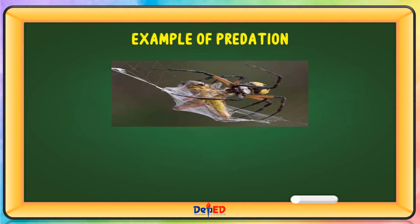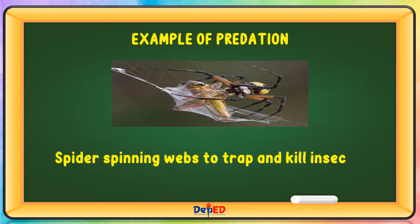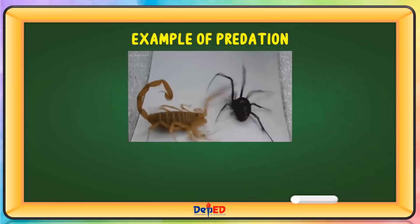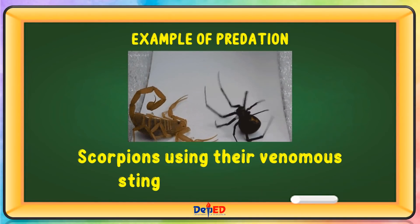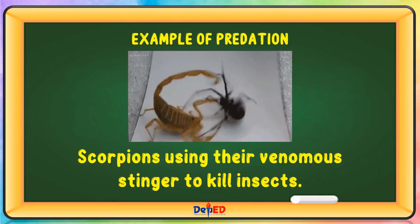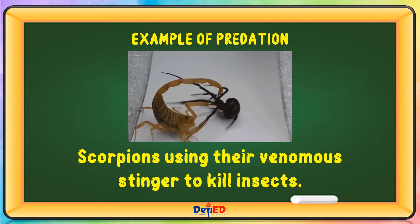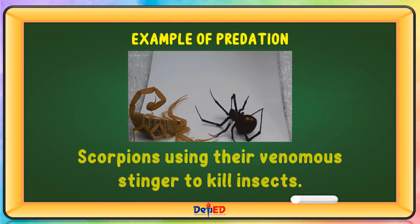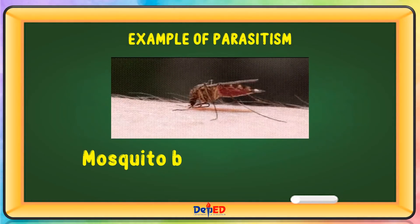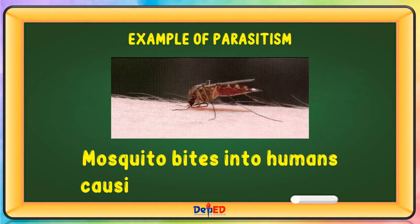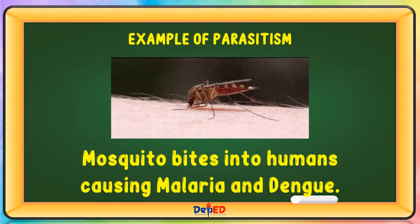An example of predation: a spider spinning webs to trap and kill insects. Another type of predation: scorpions using their venomous stinger to kill insects. An example of parasitism: mosquitoes biting humans, causing malaria and dengue.